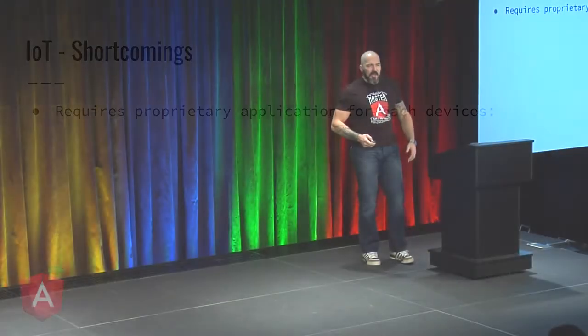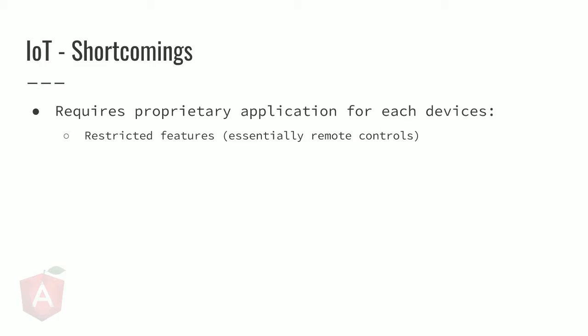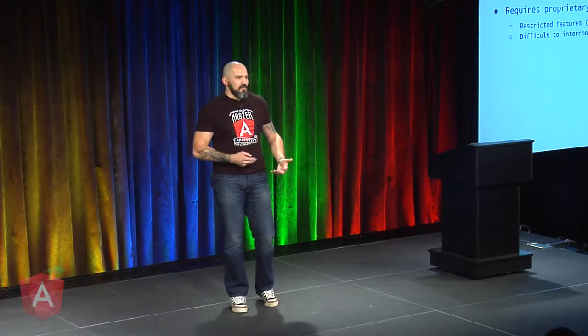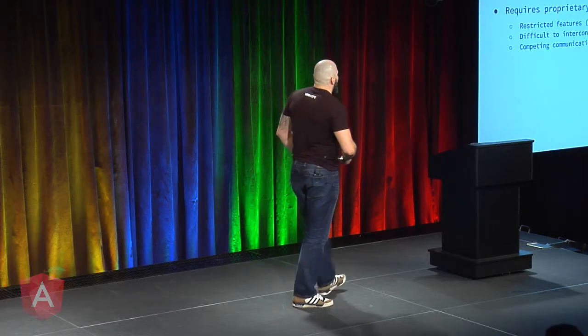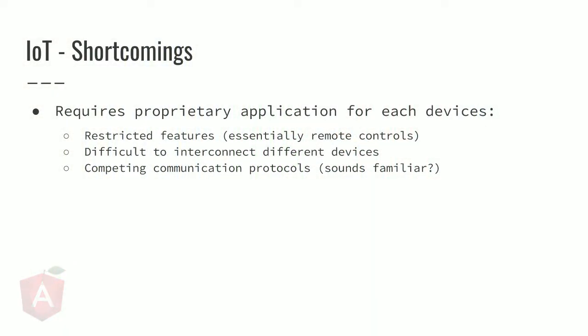However, some of the shortcomings of IoT is that every device implements its own application, which makes it a little bit restricted in terms of the features it offers. Essentially, you're just using it as a remote. It can be difficult to interconnect different devices unless you're buying from the same brand, in which case they have their own ecosystem. They are implementing a communication protocol — the one we're going to talk about and demo around is Bluetooth Low Energy, BLE — but there are other implementations, and ultimately you end up with just one more standard.